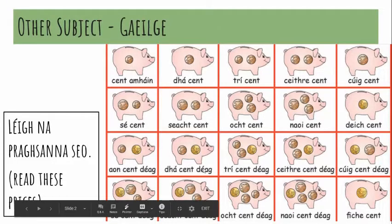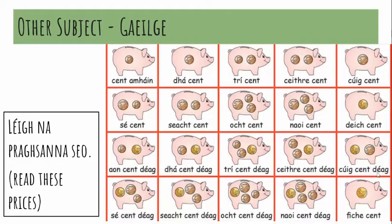Dhá cent déag. Trí cent déag. Ceathair cent déag. Cúig cent déag. I'm just not going to put my pointer over the last five so that the box doesn't come up and we can still read them as we go — just try and stick along with me. Sé cent déag, seacht cent déag, ocht cent déag, naoi cent déag.